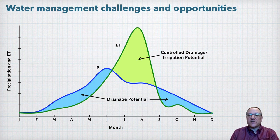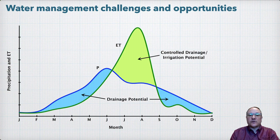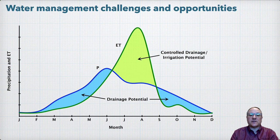What we see here is that during the spring and fall, precipitation exceeds ET, creating the need for drainage in poorly drained soils. However, in the middle of the row crop growing season, ET will generally outpace precipitation. Stored soil moisture helps buffer this difference, but in many years there can be periods of water deficits that limit crop yield. Controlled drainage can help store some additional early season moisture to be available for crops later in the growing season.